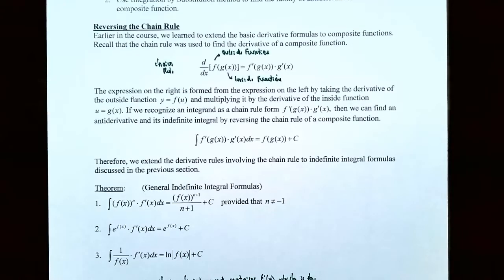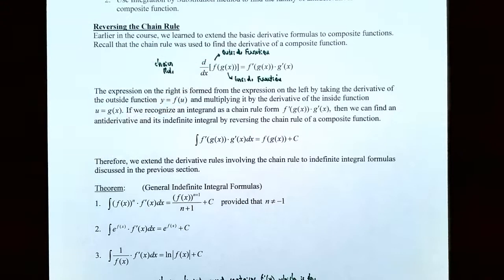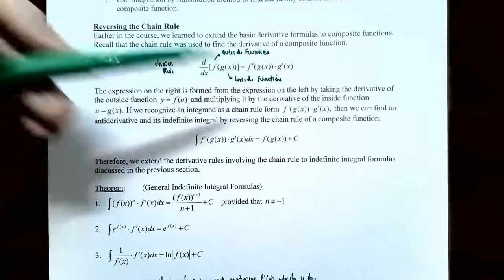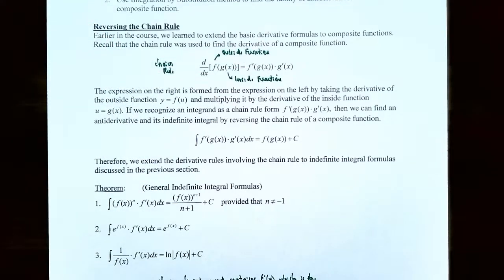So let's start with the topic of reversing the chain rule. Earlier in the course, we learned how to extend the basic derivative rules to composite functions. We identified the inside and the outside function for a composite function, and we knew that the derivative of the composite function was defined as follows. The derivative with respect to x of the composite function — f is the outside function and g of x is the inside function — so you get f of g of x, the composite function. The chain rule says the derivative is: you take the derivative of the outside function, f prime, but you keep the inside function the same, g of x, and then multiply by the derivative of the inside function, g prime of x.